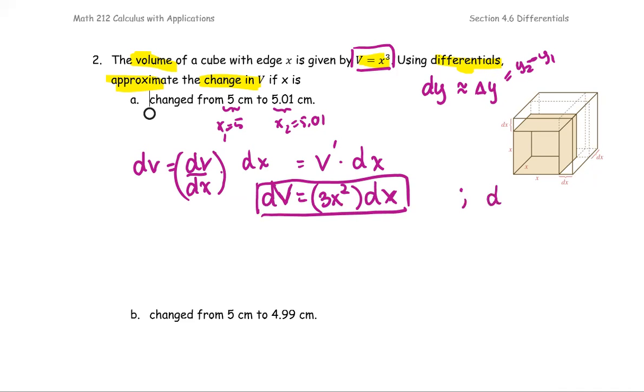Note that dx, or the differential x, is the same as delta x. Delta x is the change in x, that means the difference of x2 and x1. Our x2 is 5.01, the x1 is 5, so the difference is 0.01.